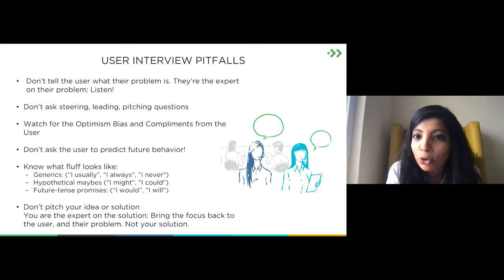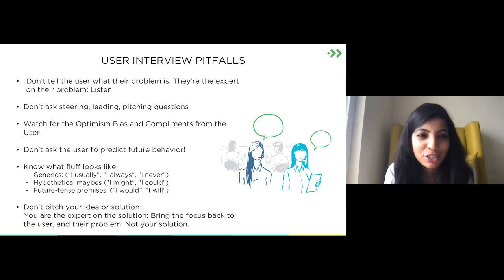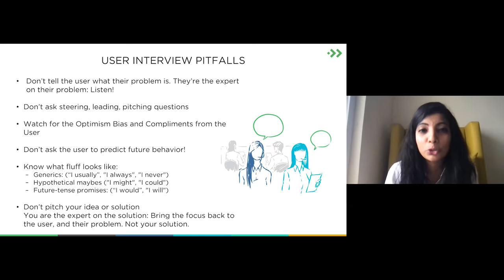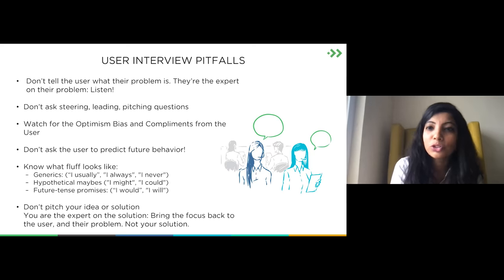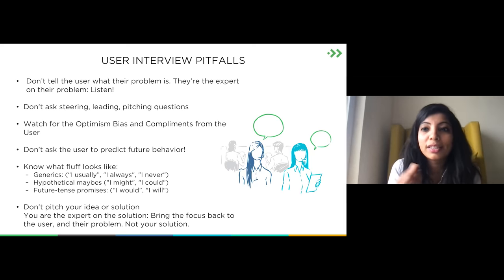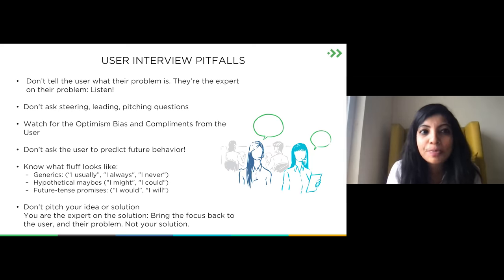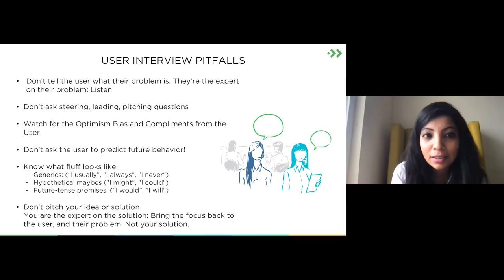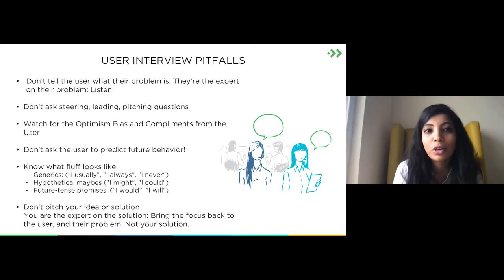Some things to keep in mind when talking to users: don't tell the user what their problem is — they are the expert. Listen. Don't ask steering, leading, or pitching questions. Watch for compliments, especially when users are trying to make you feel good about your idea because they know it's your product — they'll steer the conversation to be complimentary. You'll have to deflect and bring it back to what's actually useful: how they're using a particular product and what their problems really are. When someone uses words like 'usually' or 'always,' ask them to be specific: how often, when, what happened.